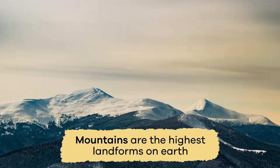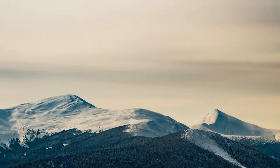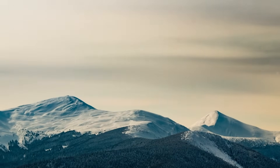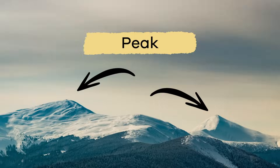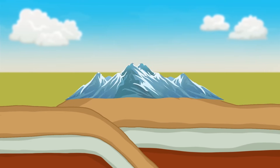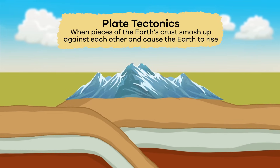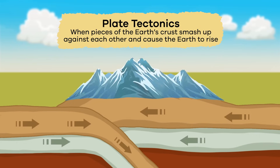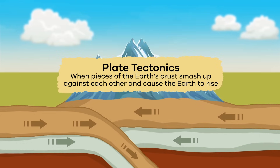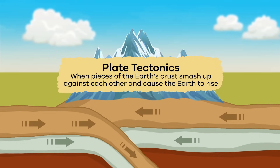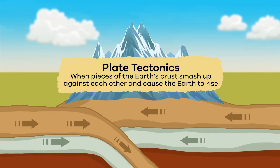Mountains are the highest landforms on Earth. Each mountain has a tip at the very top that is called the peak. The tallest mountains are formed by plate tectonics, when pieces of the Earth's crust smash up against each other and cause the Earth to rise.